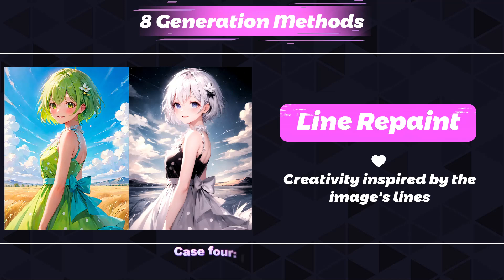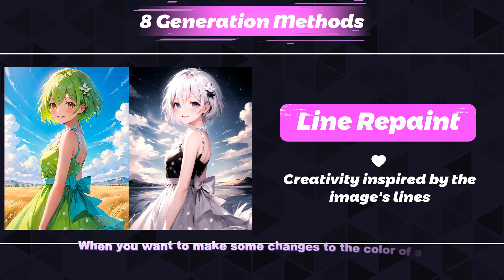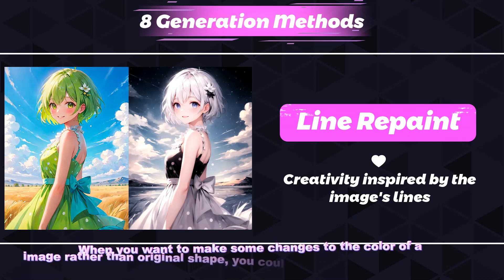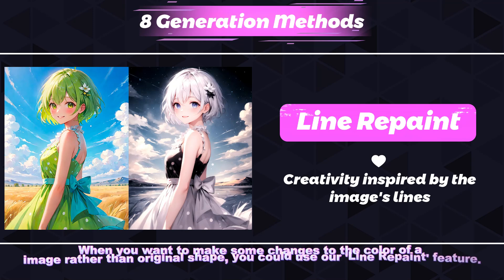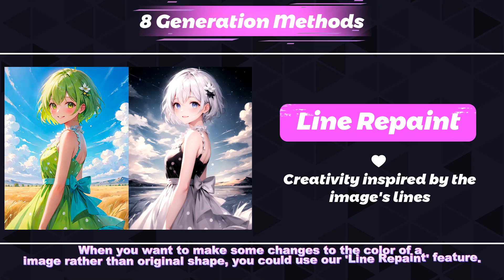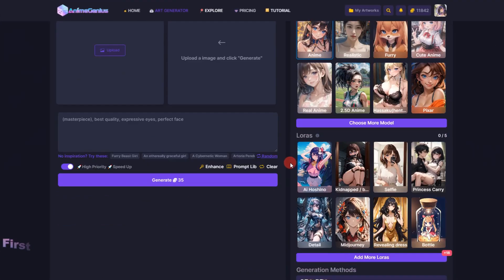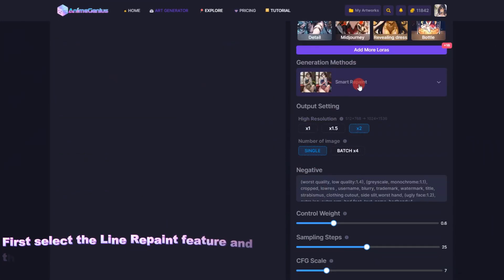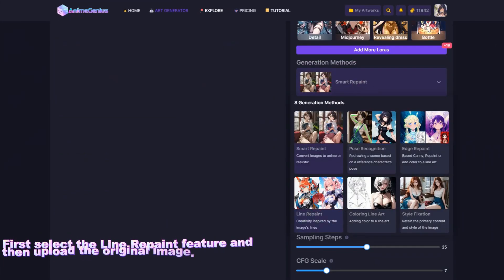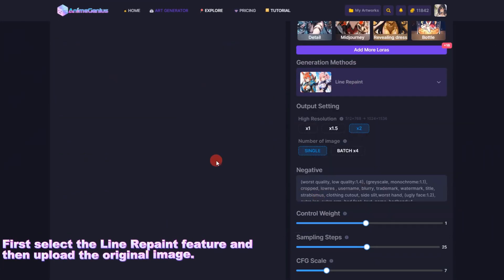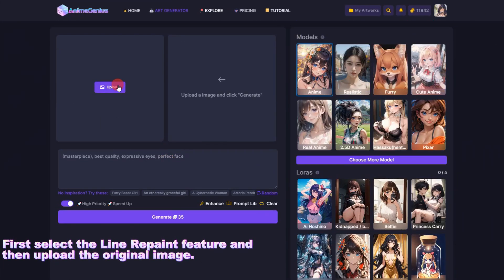Case 4: Image Repaint. When you want to make some changes to the color of an image rather than the original shape, you could use the Line Repaint feature. First, select the Line Repaint feature and then upload the original image.